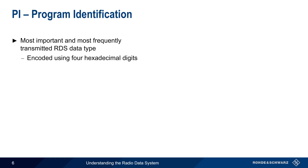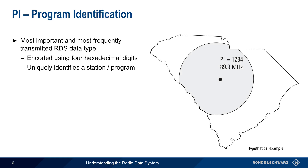This is a four-digit hexadecimal value that uniquely identifies a station or a program. In most cases, a PI will correspond to the program being sent by a single transmitter and received in a single geographical area.